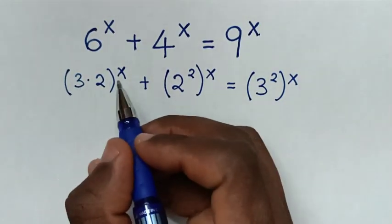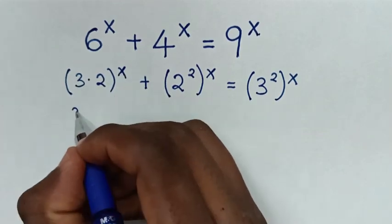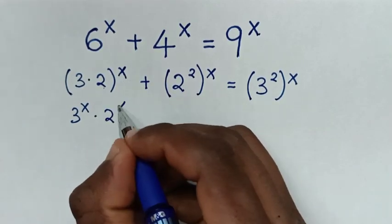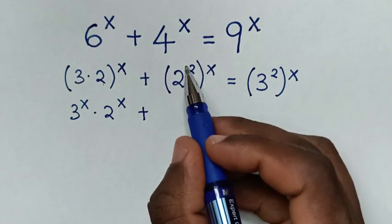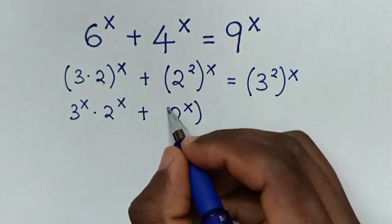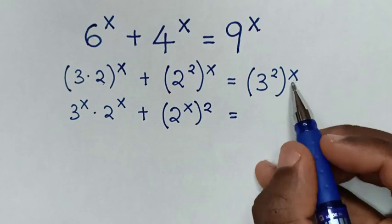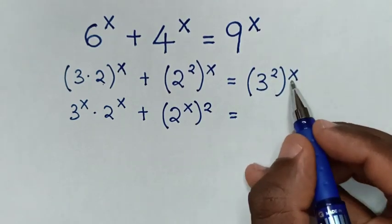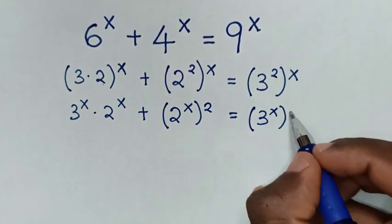In the next step we open the brackets, so the power of x goes inside. This gives us 3^x times 2^x, plus — exchanging the powers — 2^x raised to the power of 2 outside the bracket, is equal to — also exchanging the powers — 3^x raised to the power of 2 outside the bracket.